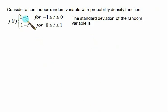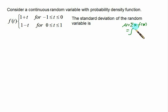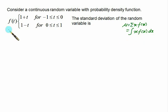In this question, f(t) is defined over two intervals: from −1 to 0 and from 0 to 1, and we want to calculate the standard deviation. To find standard deviation we first need the mean μ. This question appeared in the GATE examination.